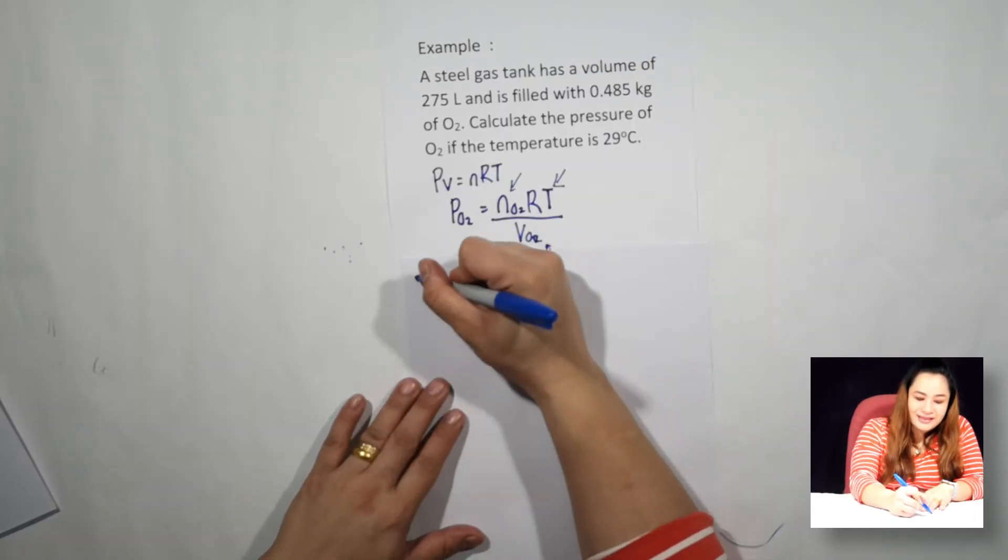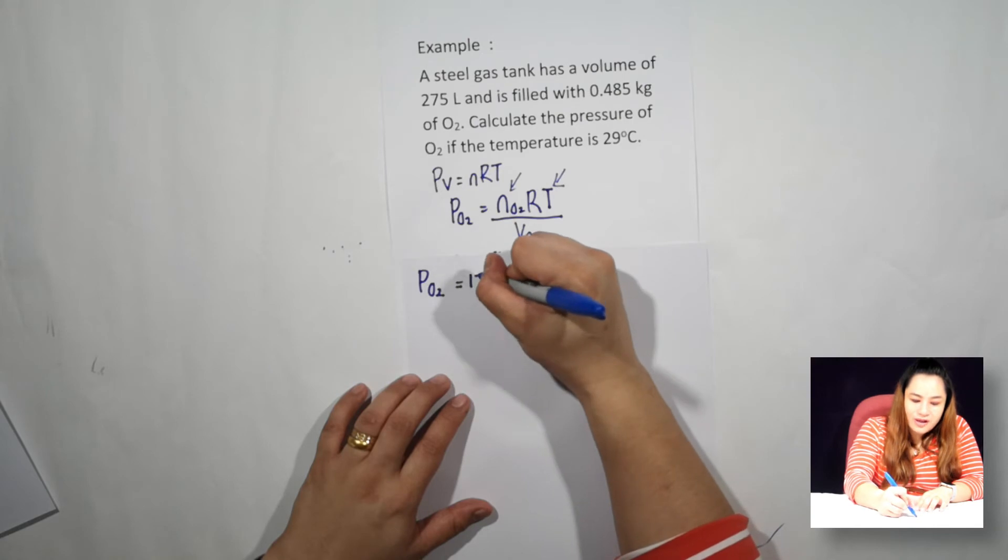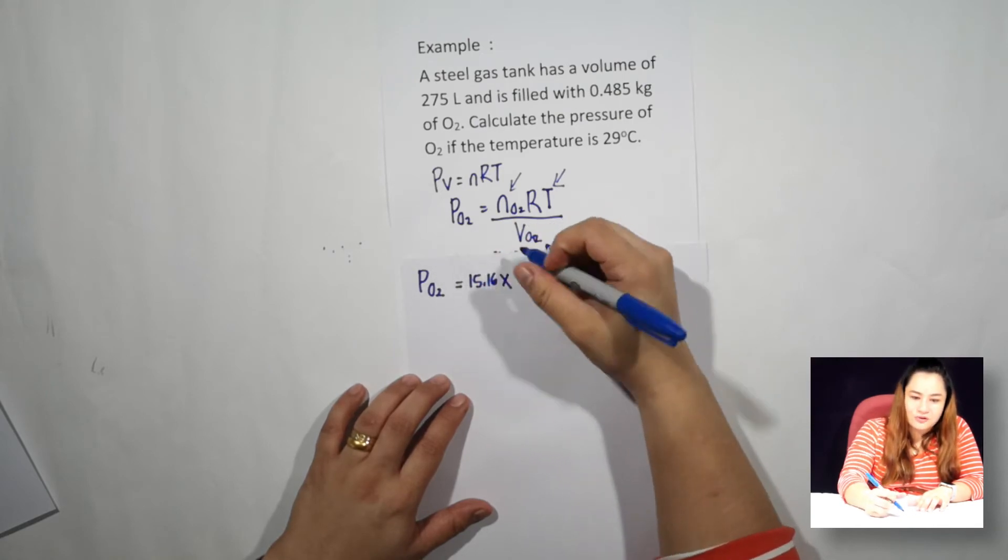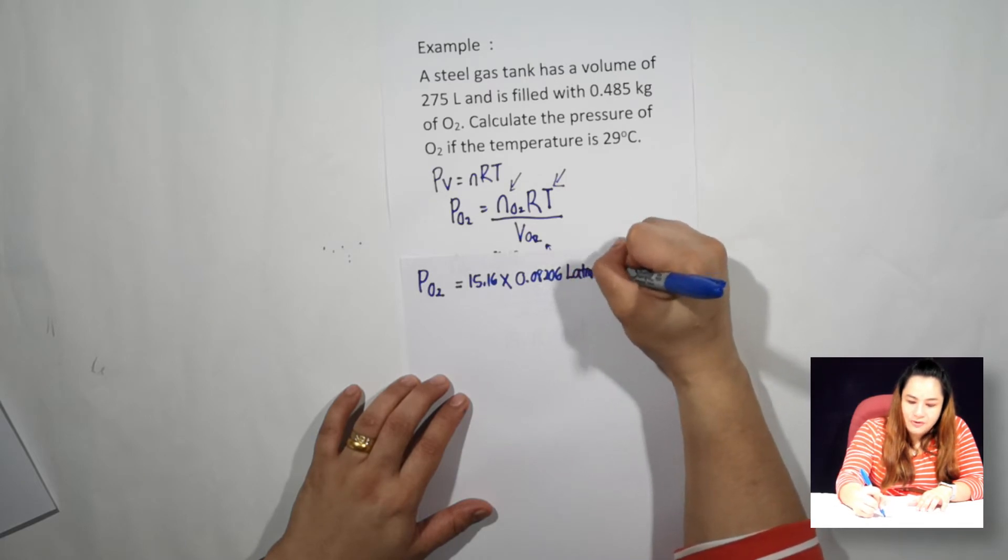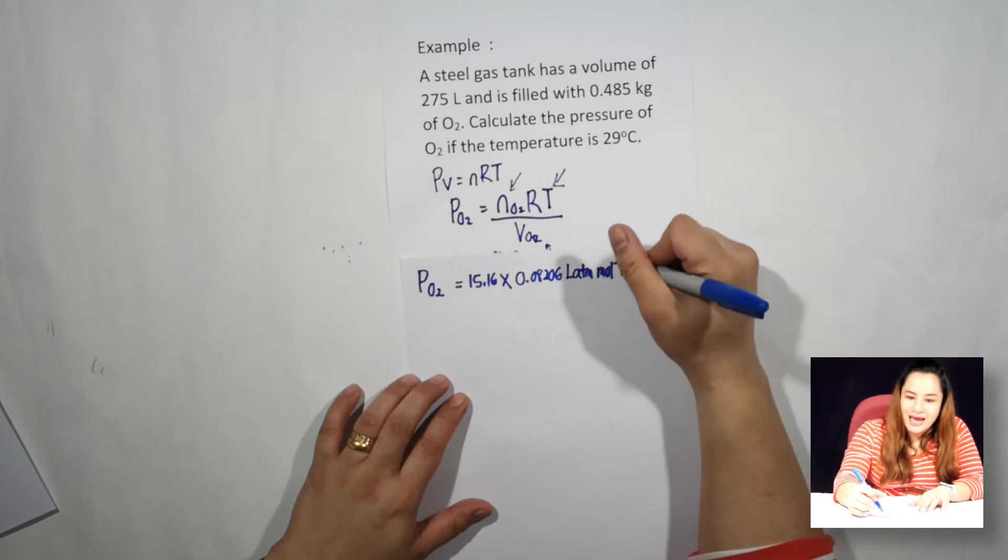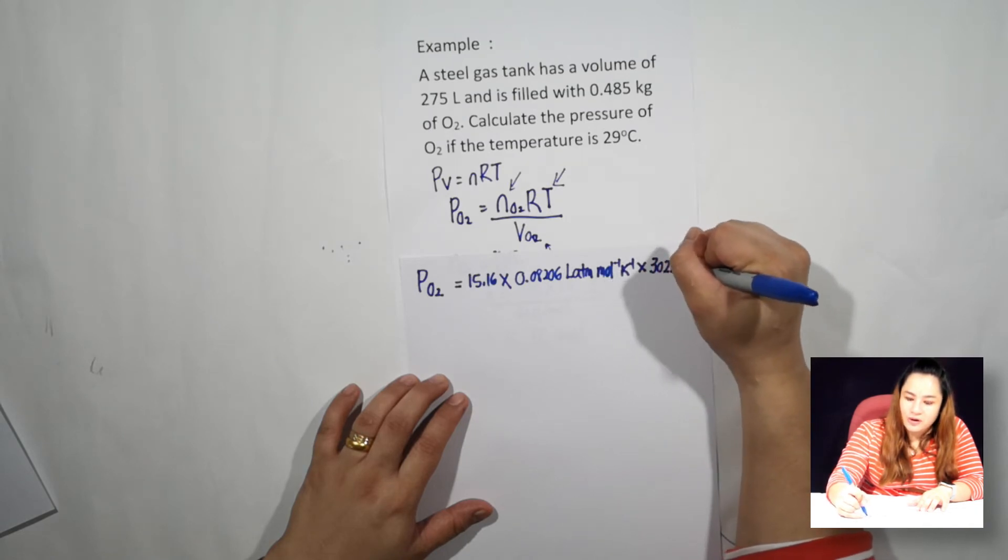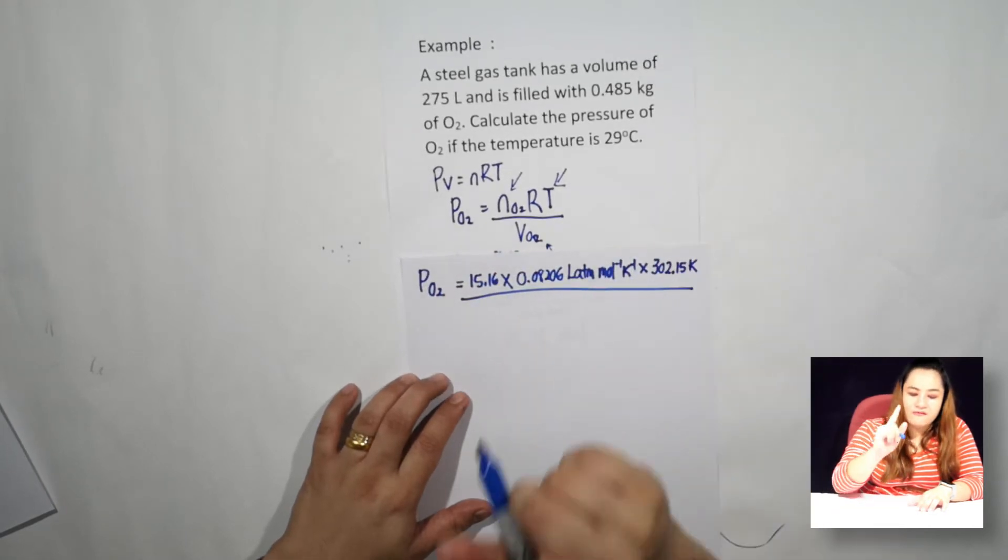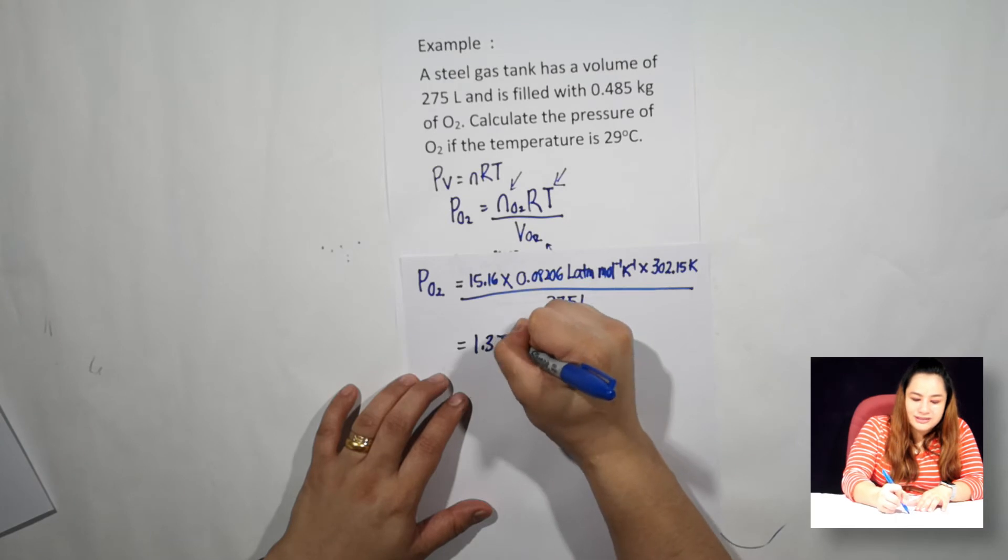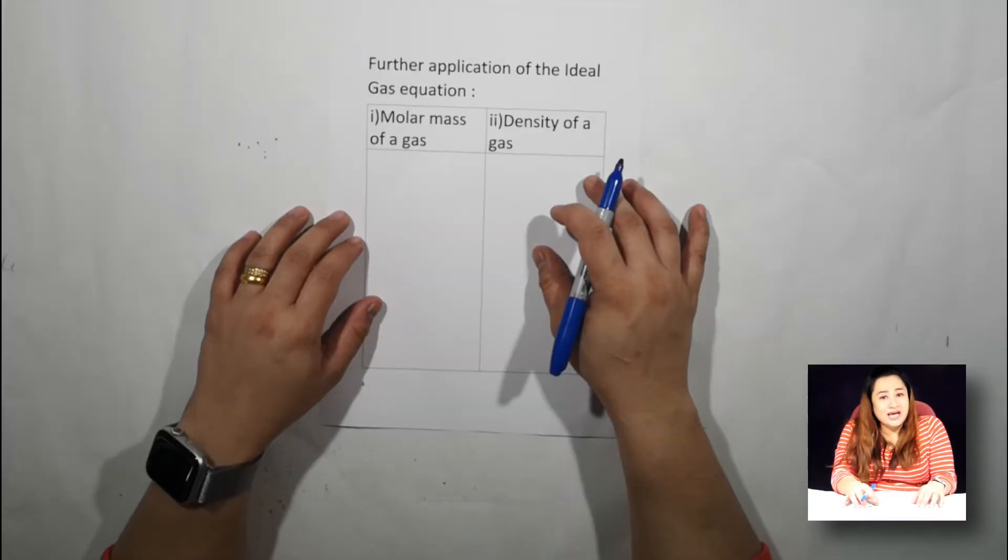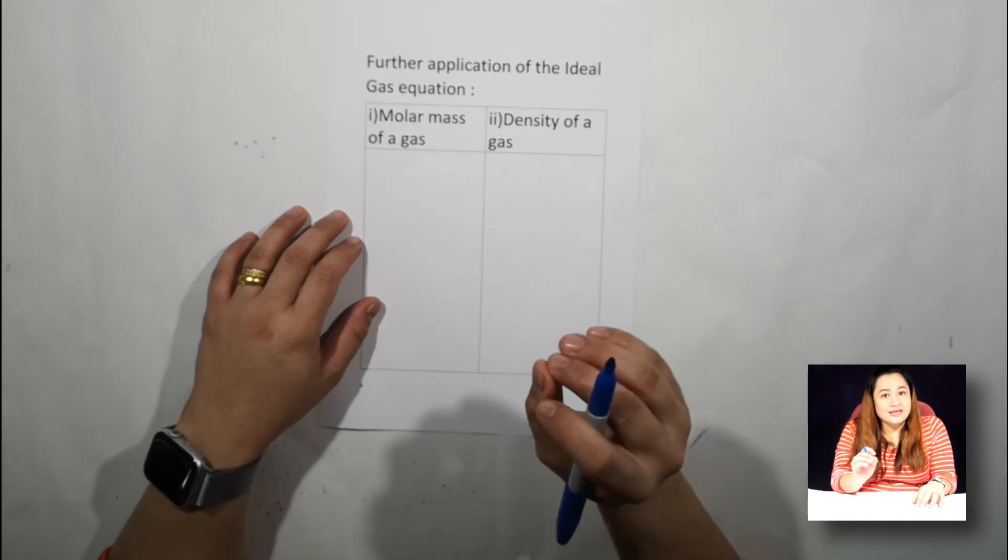Let us get the pressure of the oxygen. So pressure of oxygen equals number of moles of oxygen which is 15.16 mol times the gas constant 0.08206 liter atm per mol per kelvin. Times the temperature which we converted to kelvin, so that is 302.15 kelvin, over volume of the gas oxygen which is 275 liters. So you will get 1.37 atm.